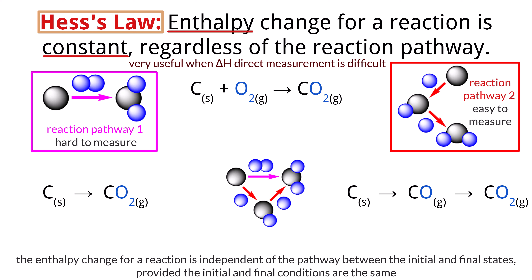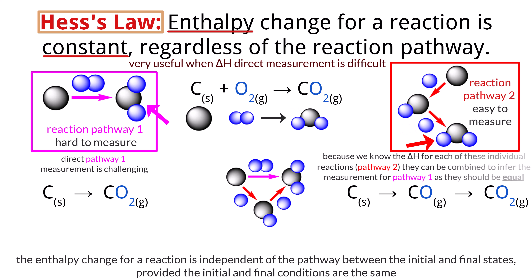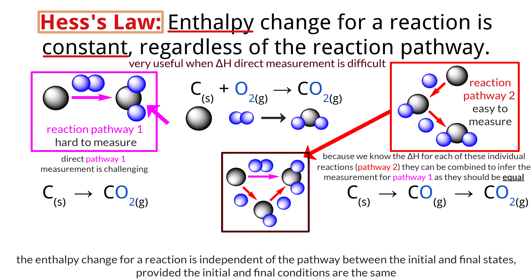An example of Hess's law is the combustion of graphite to form carbon dioxide: C(s) + O2(g) → CO2(g). Direct measurement of this reaction's delta H might be challenging. However, if the delta H for the formation of carbon monoxide from carbon is known — C(s) + ½O2 → CO, measured as delta H1 = −111 kJ/mol — this can be combined with another known reaction.